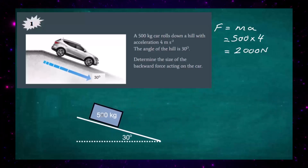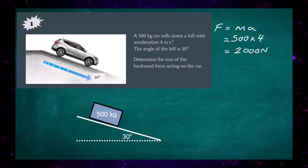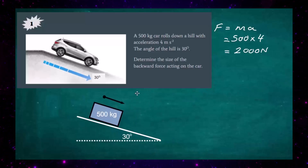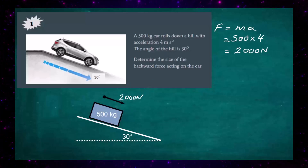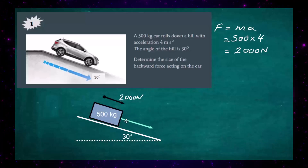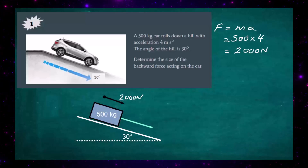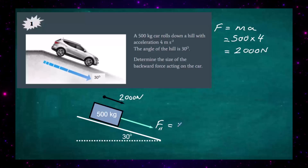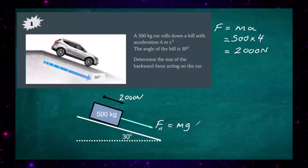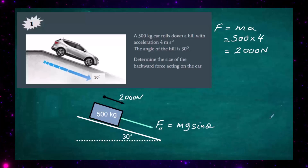Looking at the diagram, we have a 500 kilogram car on a slope of 30 degrees. The unbalanced force acting down the slope is 2000 newtons. We now need to fill in the other forces acting on the car. The first force is the weight component of the car acting parallel to the slope, which we can find using the equation F parallel to the slope equals MG times sine theta.